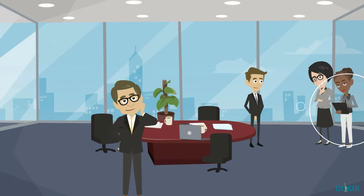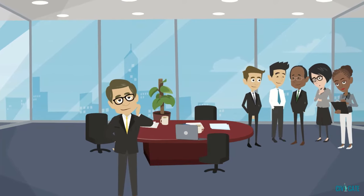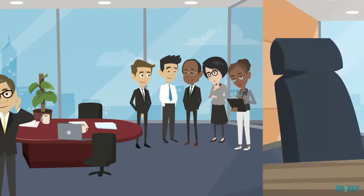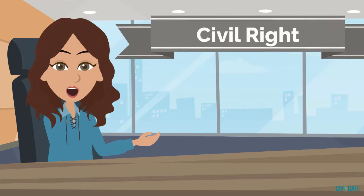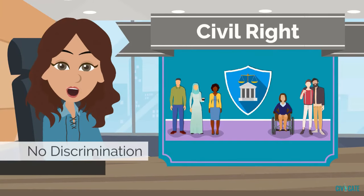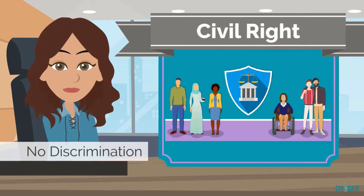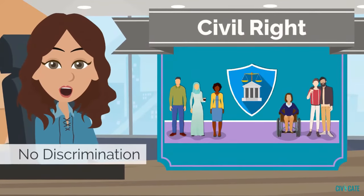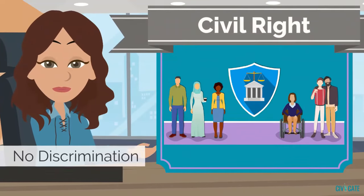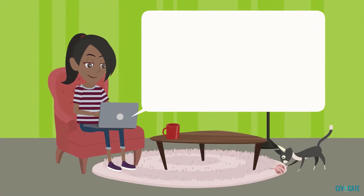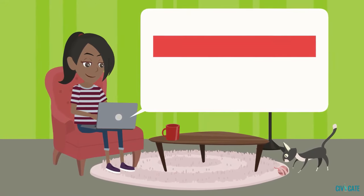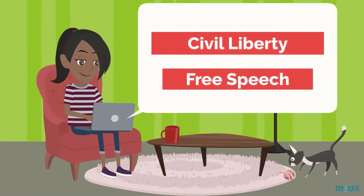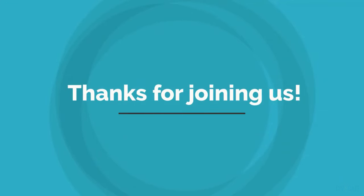A modern example of the difference between a civil right and a civil liberty is if you have a job and your company is going to choose one person to promote to manager. You do not have a civil right to the promotion, but you do have a civil right to make sure that your boss does not base the promotion on your race, gender, sexual orientation, religion, or age. You have to be considered fairly with all the other employees. If you do not get the job and you decide to write a negative article about your company, you have a basic right or civil liberty to express your opinion through free speech. Thanks for joining us.